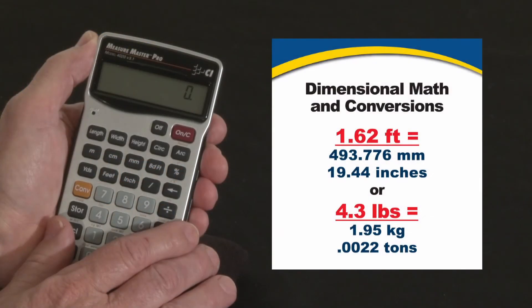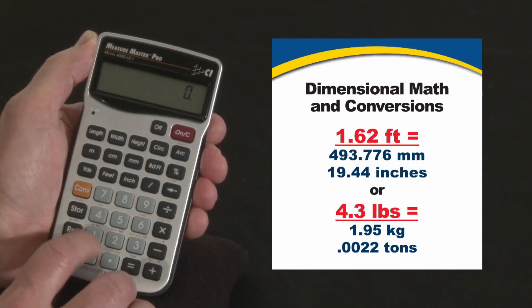Now let me show you how to do dimensional math and conversions on your MeasureMaster Pro. First off, to enter dimensions, you enter them in just as you'd say them.